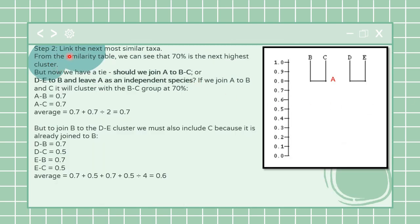Now step two - we link the next most similar taxa. From the similarity table we see that 70 percent is the next highest cluster. But we also know that there is a tie that comes up.